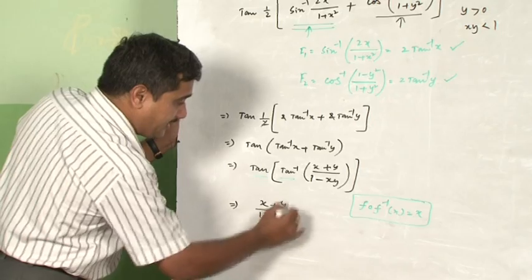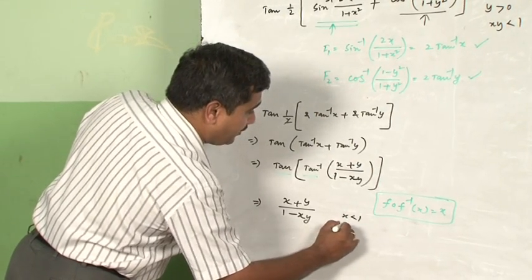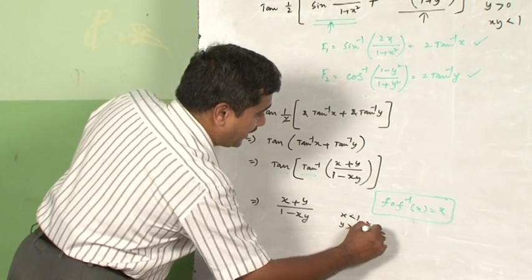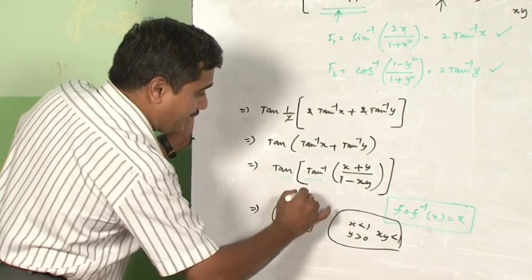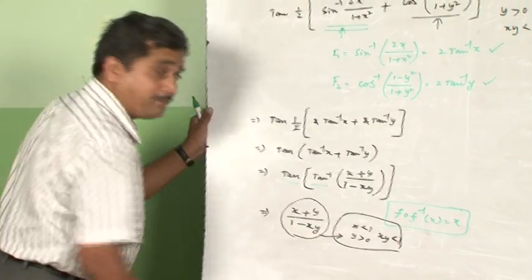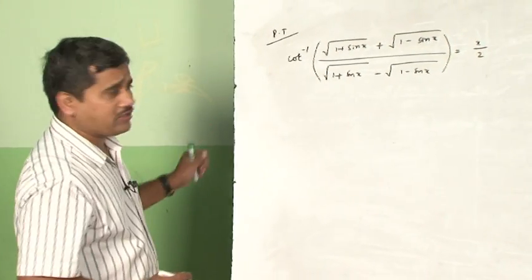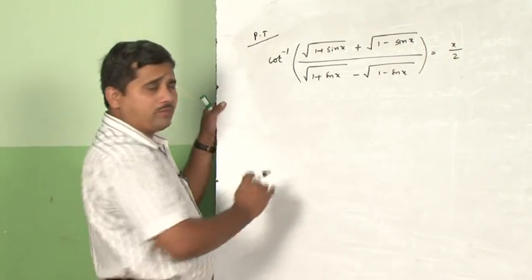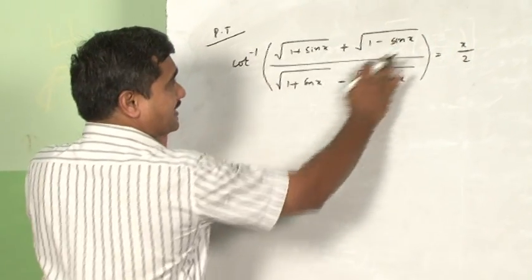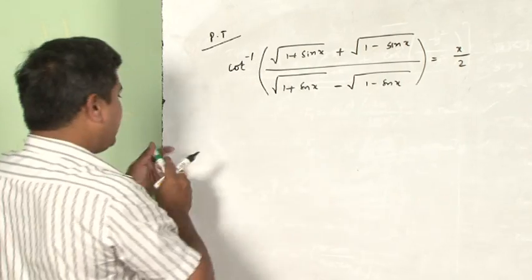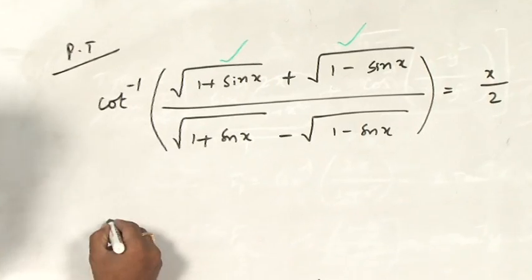Interestingly, the conditions |x| < 1, y > 0, and xy < 1 are exactly the conditions under which this result is valid. Because of these values the answer holds. Now we will be dealing with another important problem — handling √(1 + sinx) and √(1 − sinx) inside a cot inverse.